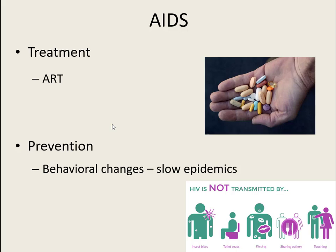Our best bet is to not get HIV. Prevention includes behavioral changes — monogamy, using condoms — and if you think you've been exposed, getting tested and getting on treatment right away so that you are not infectious.